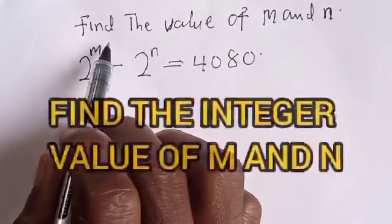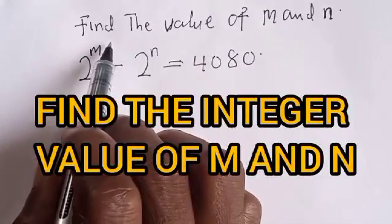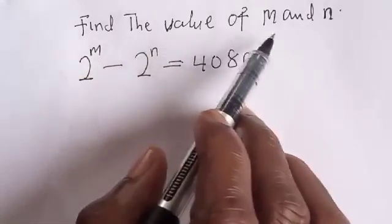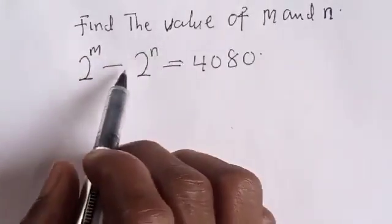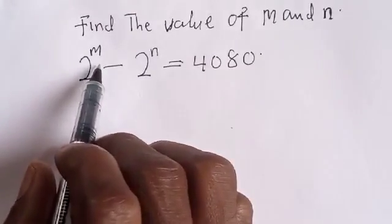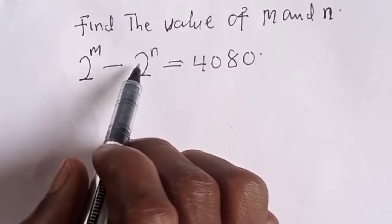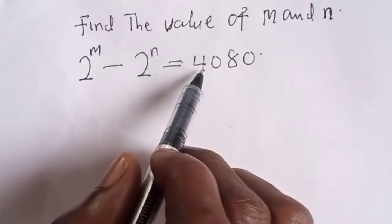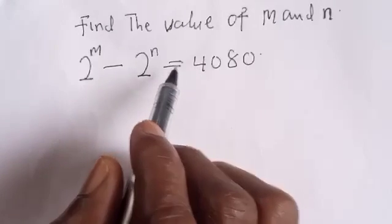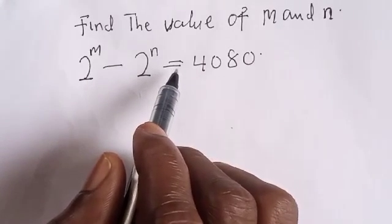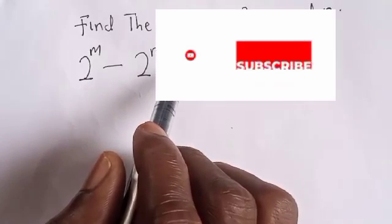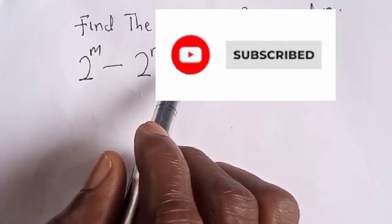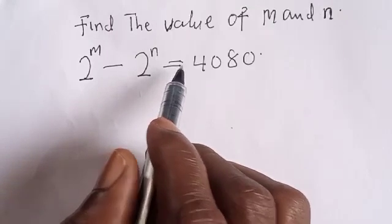Hi everyone, welcome to my class — the Olusta class. In today's class we want to look at how to find the value of m and n from this question: we have 2 raised to power m minus 2 raised to power n is equal to 4080. But before we proceed, please don't forget to like, share, comment and subscribe so that you can be notified whenever I post new videos.